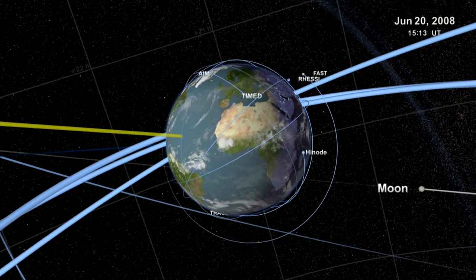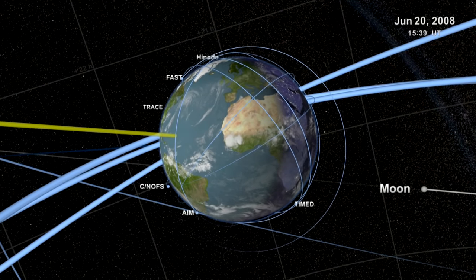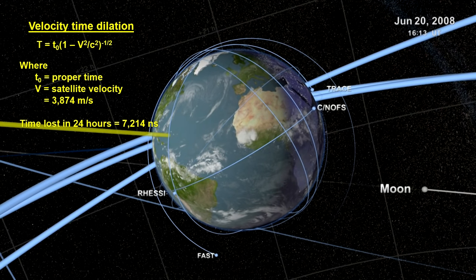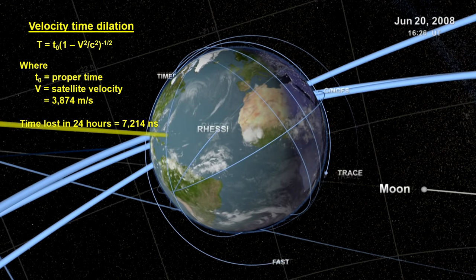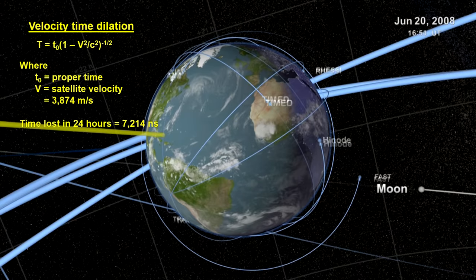We see this with our global positioning systems. In our segment on special relativity, we saw that time dilation, due to velocity differences, have GPS satellites losing time every day. Time that must be corrected for to get the right position on the surface of the Earth.